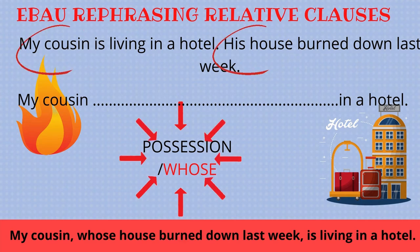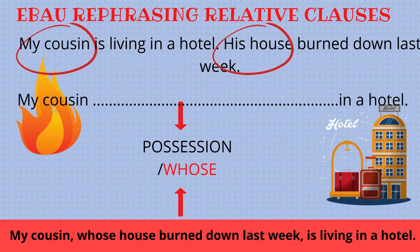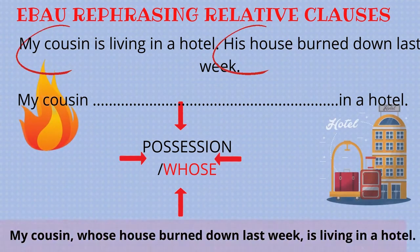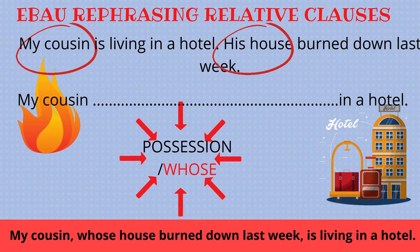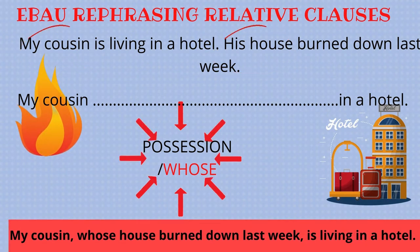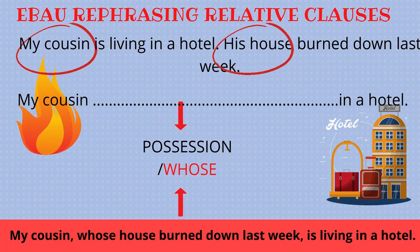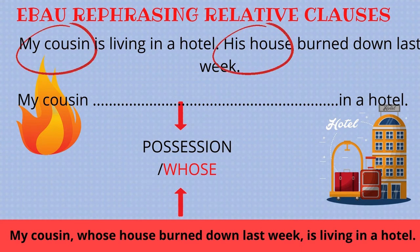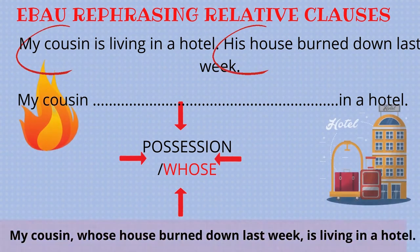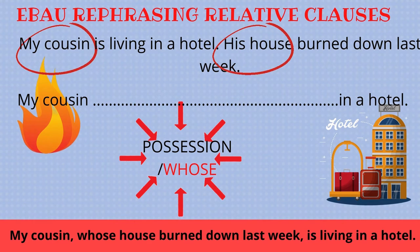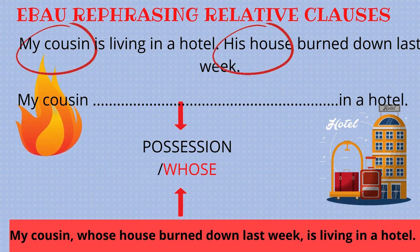We need to focus on two words: 'my cousin' and 'his house'. The relative clause beginning with 'whose' must be placed right after its antecedent — in this case, 'cousin'. When joining the two sentences using 'whose', we omit the possessive pronoun 'his'. Just a reminder: this sentence is non-defining because it adds extra information, so we need to use commas.